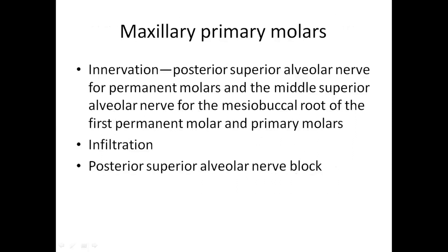For maxillary primary molars, these are innervated by the posterior superior alveolar nerve for permanent molars and the middle superior alveolar nerve for the mesiobuccal root of the first permanent molar and primary molars. Local infiltration anesthesia is effective for the first primary molar owing to the relatively thin overlying bone. Local infiltration used alone for the second primary molar is less effective because of the thickness of bone in the area. The PSA (posterior superior alveolar) nerve block is used for the second primary molars in conjunction with local infiltration.